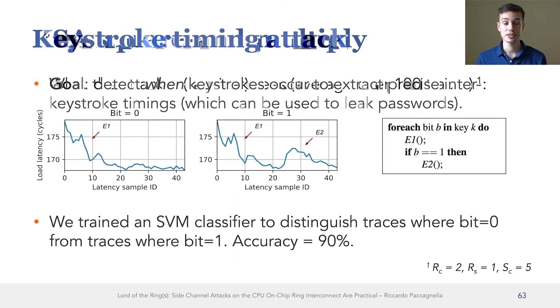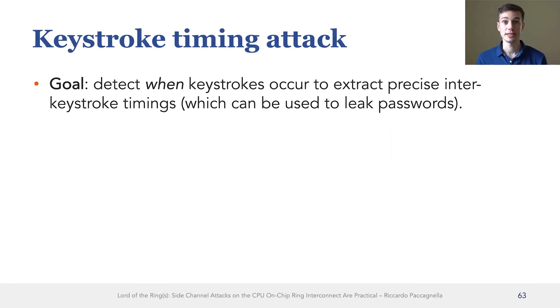Lastly, I want to move on to our second side channel attack, which is an attack against keystroke processing. The goal of this attack is to infer when the victim is pressing a key, which can later be used to infer passwords or other sensitive input that is typed by a user. So the question is, does processing keystrokes cause distinguishable patterns of ring contention that an unprivileged process can detect?